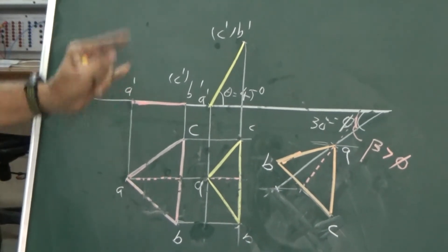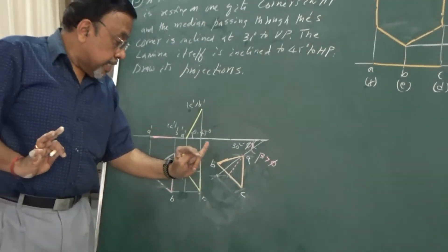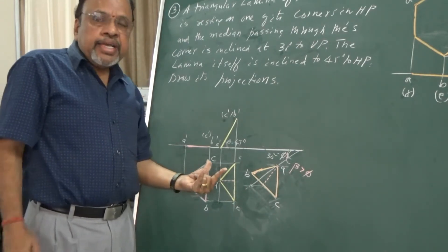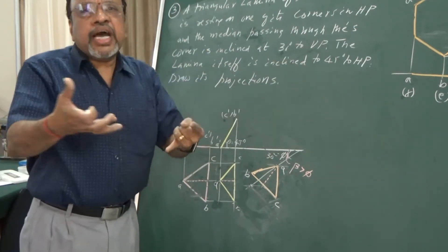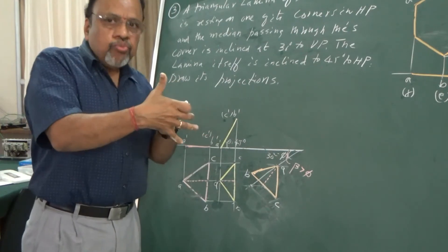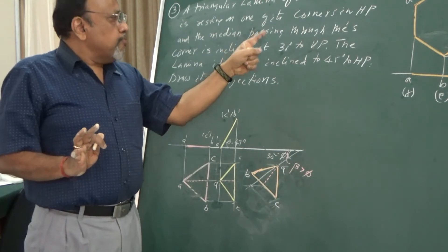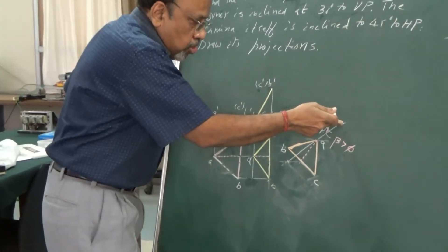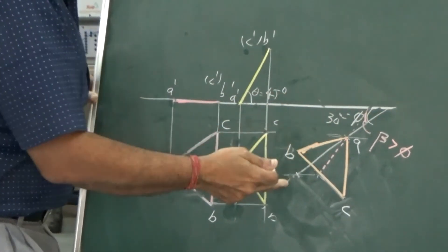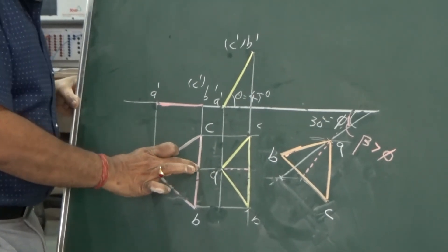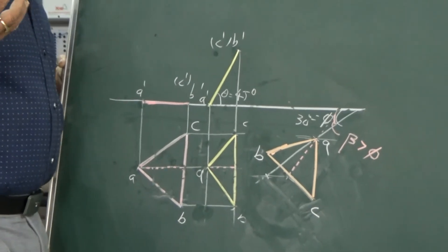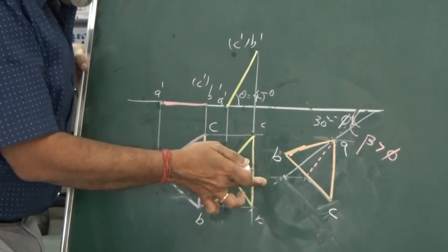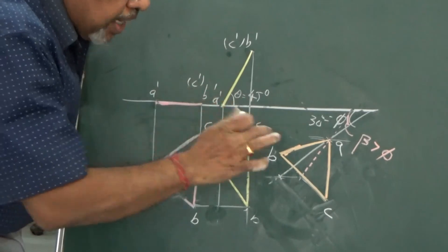The key difference in this problem compared to the previous one: in Stage 2, the line of interest — whether it is a side, median, diameter, or any other line — has been foreshortened. If the problem gives a true angle, I must determine the apparent angle. The procedure is: draw the line at the true angle, mark the true length on it, draw the locus, then use the apparent length from Stage 2 to cut the locus and find the apparent angle beta.